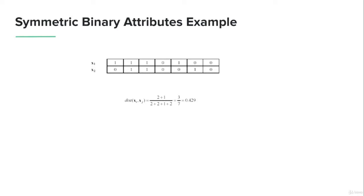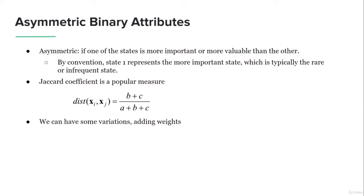For asymmetric binary attributes, one state is more important than the other — typically the rare or infrequent state. We use the Jaccard coefficient for this case. The formula is similar to the simple matching coefficient but does not include the 'd' value in the denominator, because d represents the frequency of 0,0 values which are abundant and less important. We can also add more weights using variations of this coefficient.